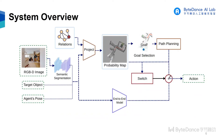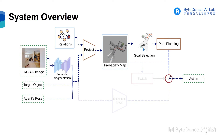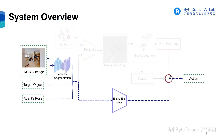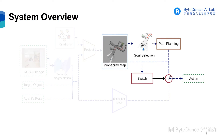Our method consists of two branches: the map-based branch and an end-to-end branch. The output of the two branches is selected by a switch strategy.